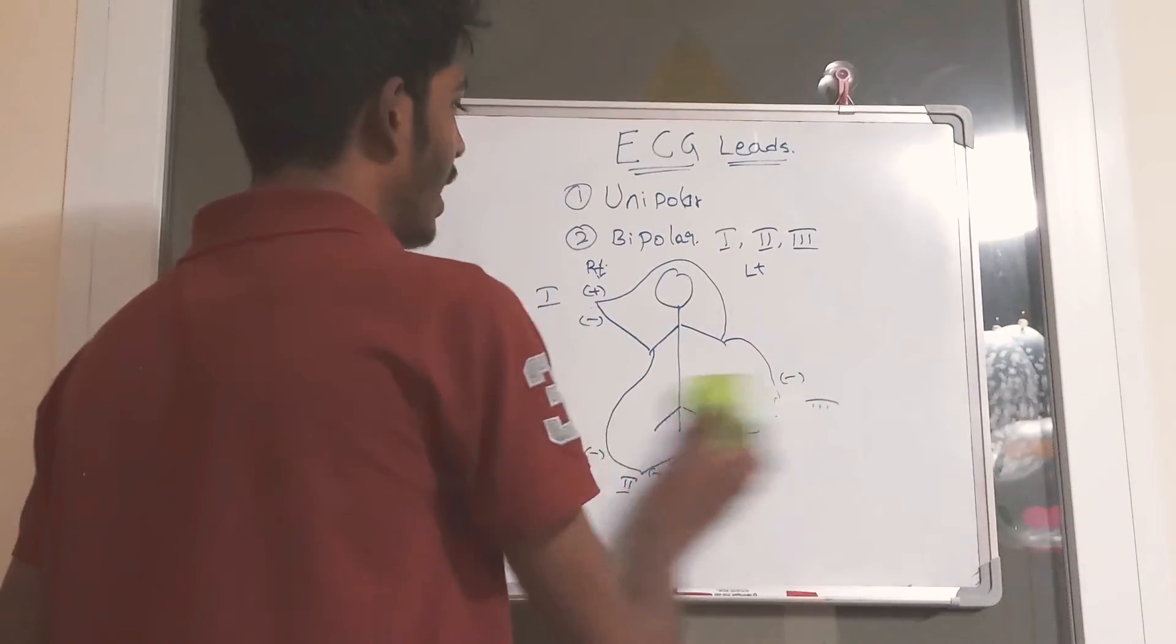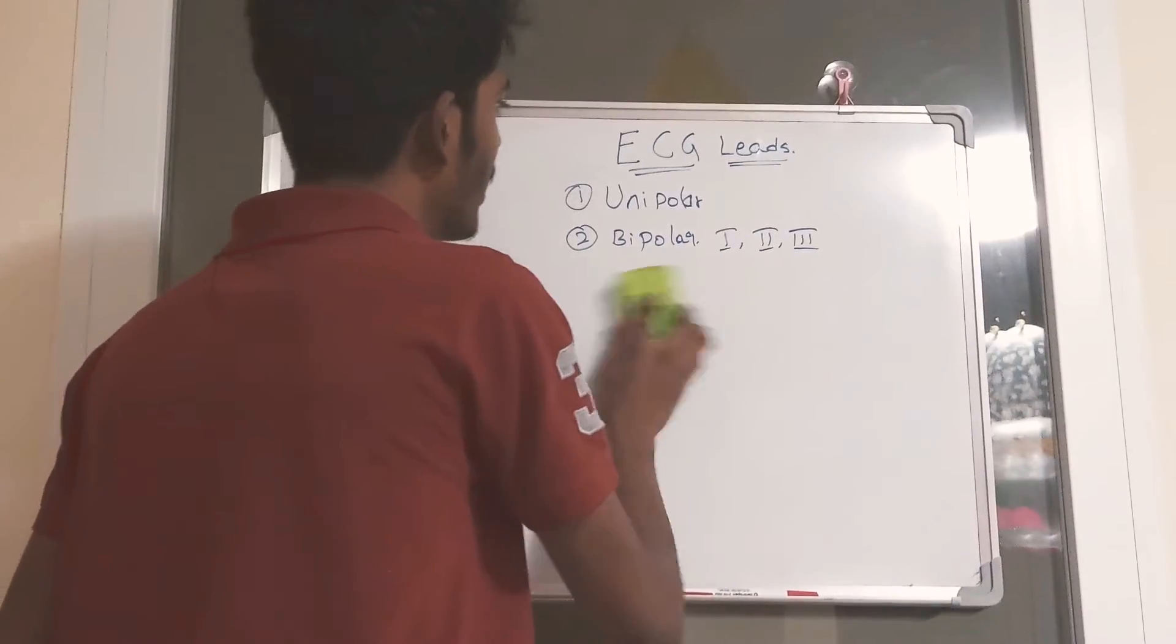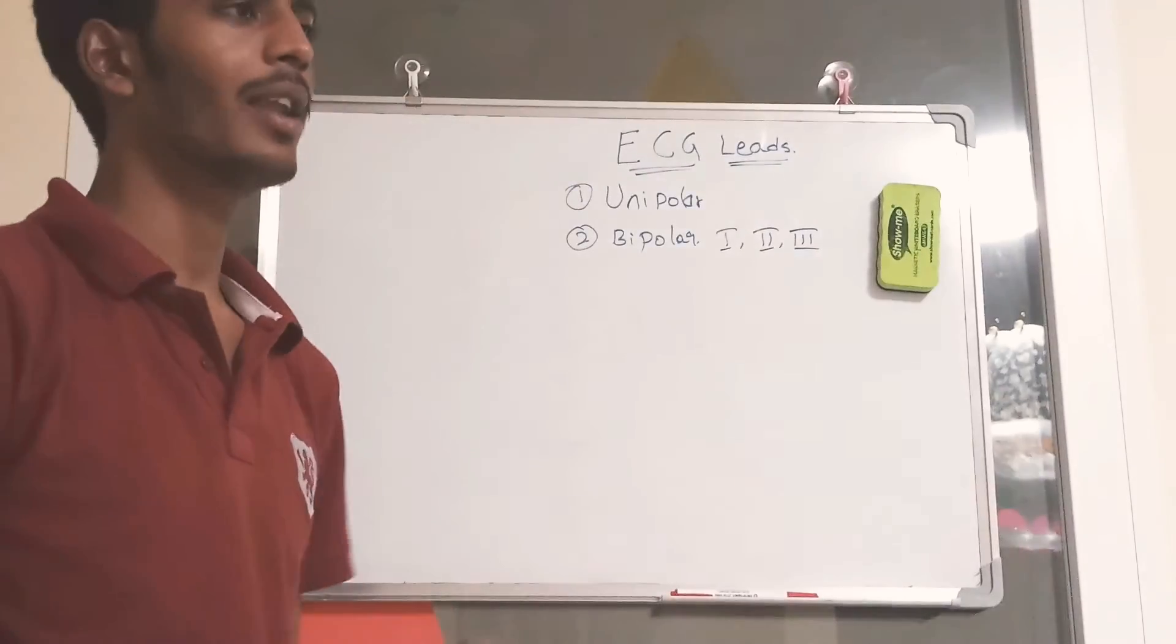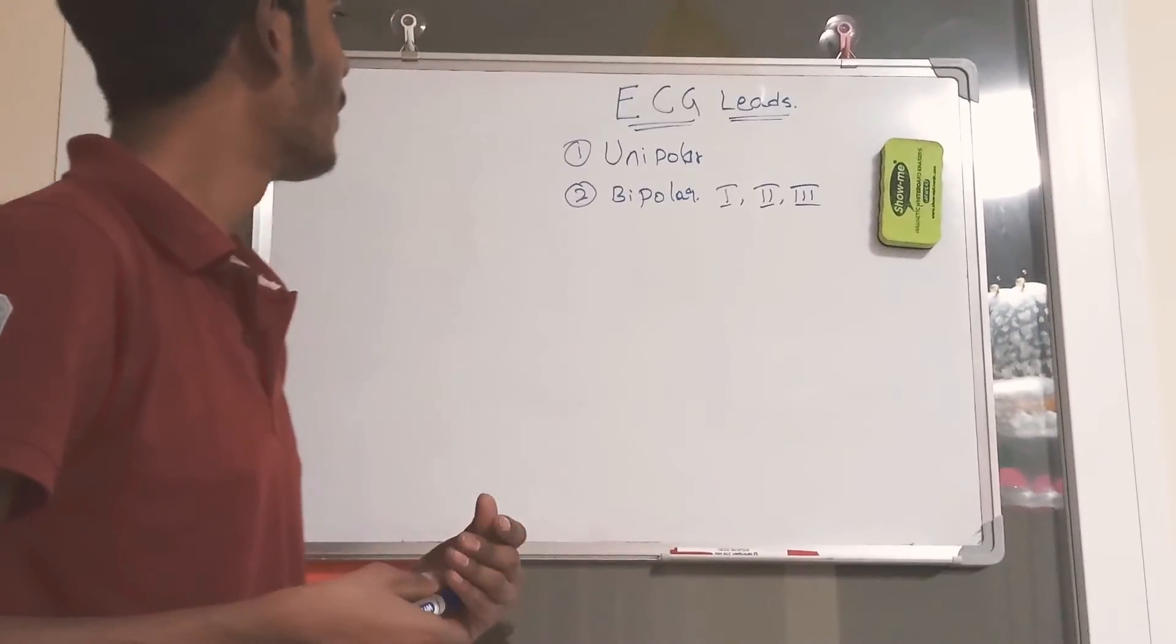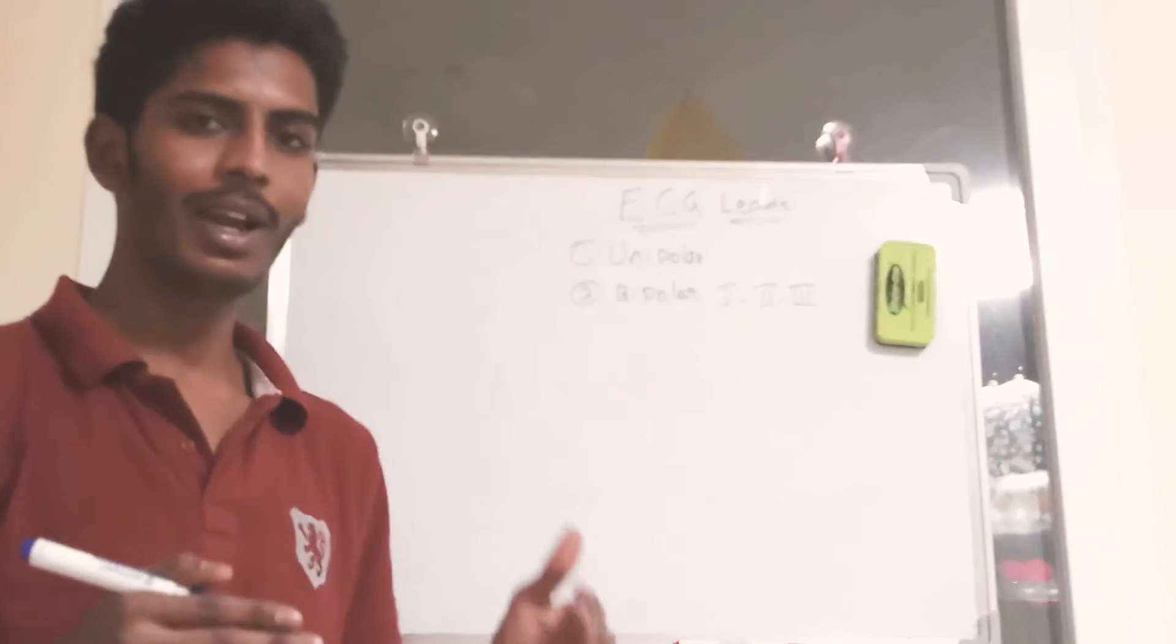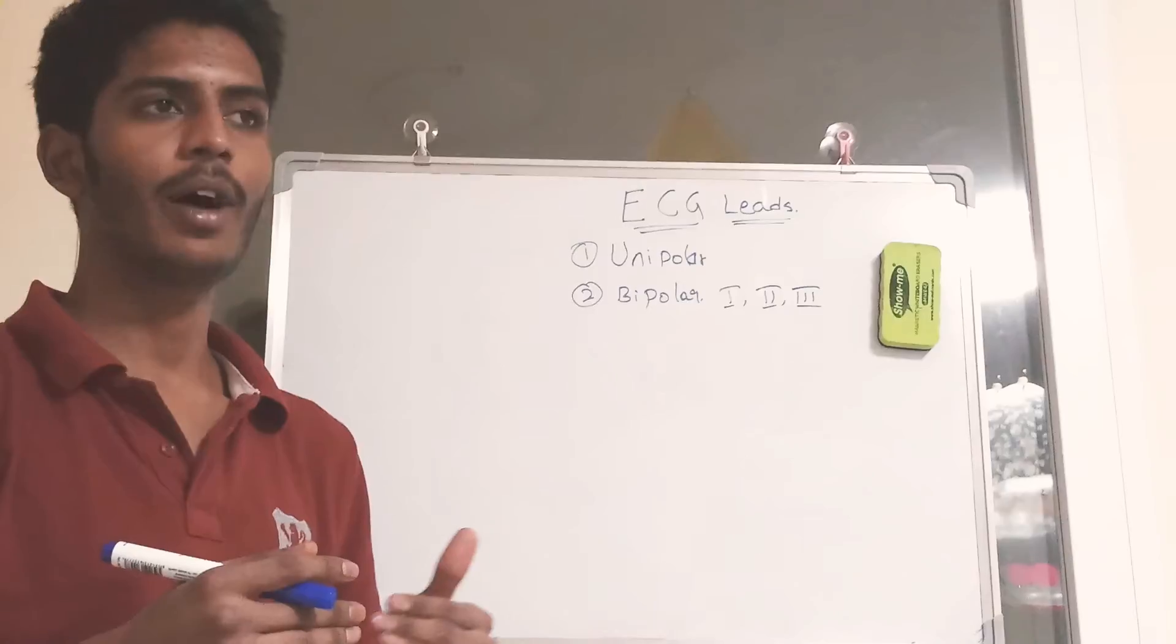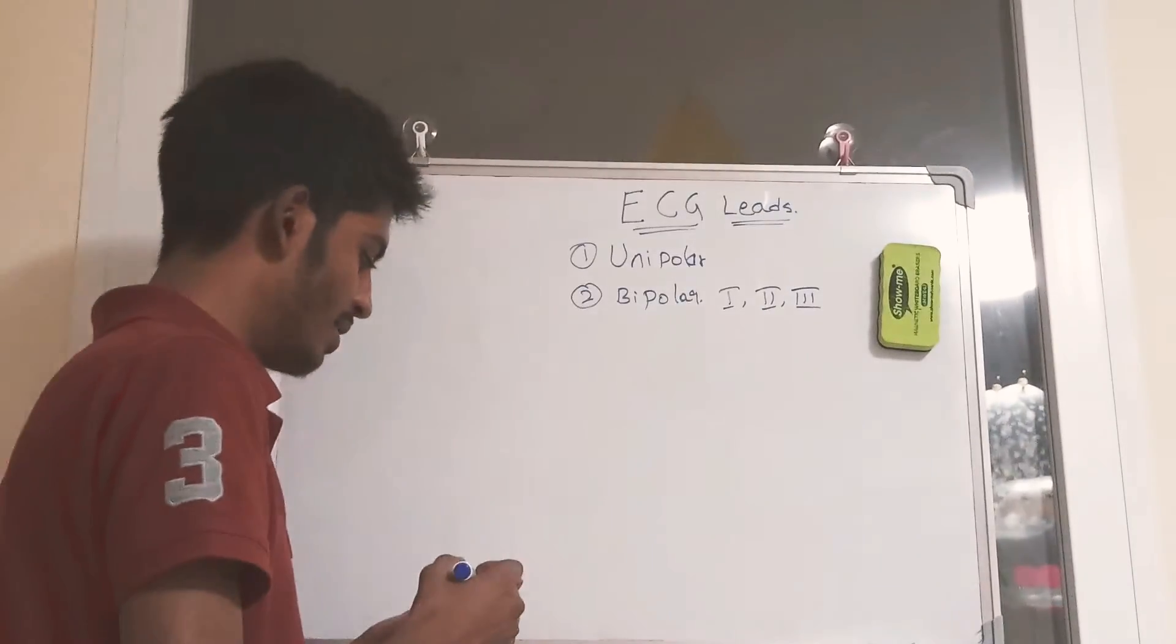Unipolar leads are again classified into two types. Unipolar leads includes two types which is chest and the limb leads. In real life, we connect only 9 leads on the human body and we get reading into 12 leads. Three are like the magnitude of the flow of the electricity.